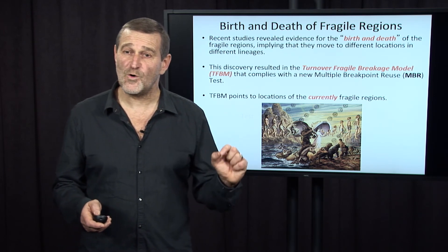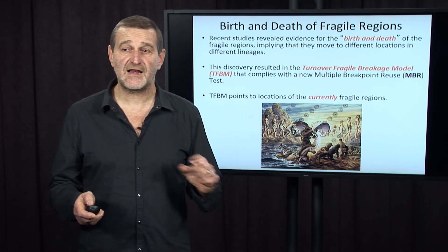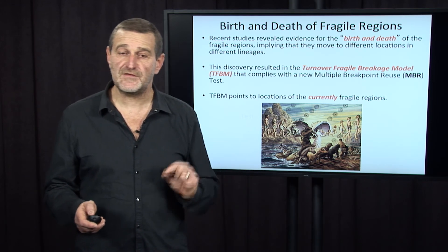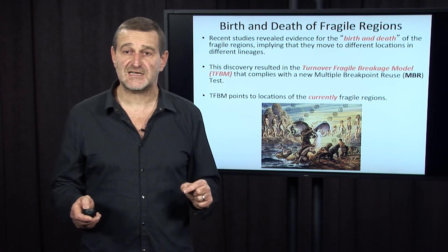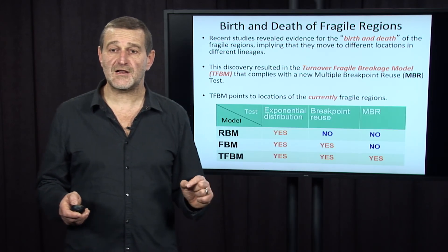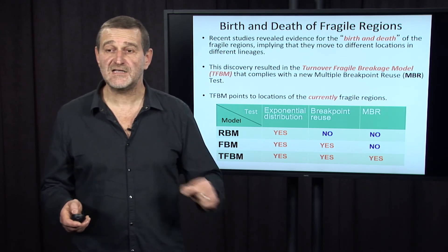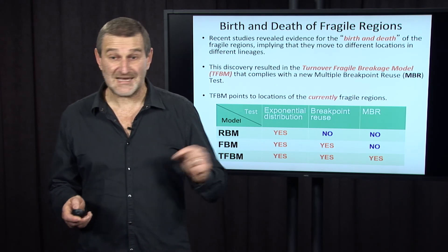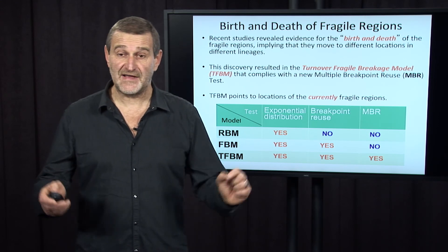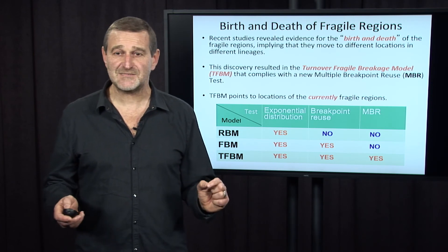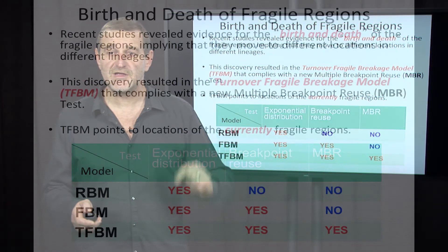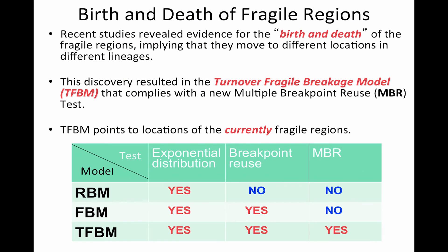This new turnover-fragile breakage model actually complies with the new multiple breakpoint reuse test. Moreover, it points to the location of the currently fragile regions — the question we were not able to answer when proving the theorem in the last section. The turnover-fragile breakage model actually complies with all three tests. Does it mean it is the absolutely final model for chromosome evolution? Of course not. Future studies may reveal new tests and lead to further development of our views of chromosome evolution.